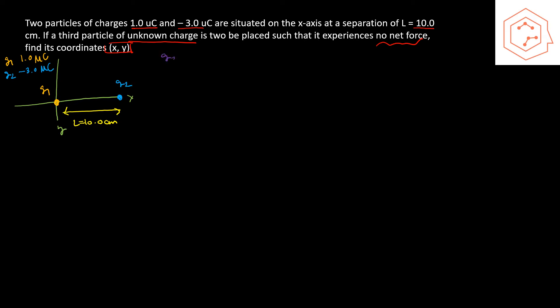We want to place q3 somewhere such that it experiences no net force. If we place it in the middle, consider a positive q3: it is repelled from q1 and attracted to q2, so no forces cancel. If q3 is negative, it is repelled from q2 and attracted to q1, and again no forces cancel. So q3 cannot be placed in the middle region between q1 and q2.